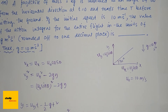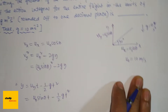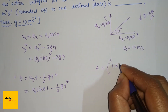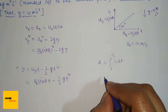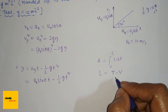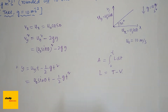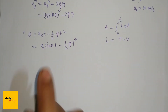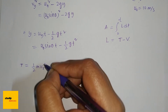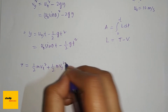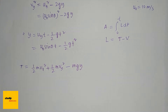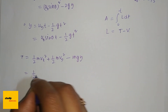We need to evaluate the action integral: S = ∫₀ᵀ L dt, where L is the Lagrangian, L = T − V. The kinetic energy T = ½m·v_x² + ½m·v_y², and the potential energy V = mgy, so L = ½m·v_x² + ½m·v_y² − mgy.